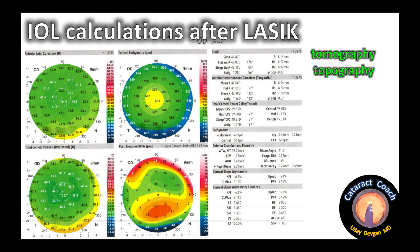The top right picture is the corneal pachymetry — this is important. We can notice that there's been thinning of the central cornea, which means the patient had a myopic LASIK done where the central corneal power was decreased on the anterior surface. The pachymetry is about 500 microns in the center, and as you go out it gets progressively thicker.